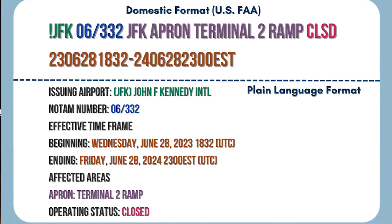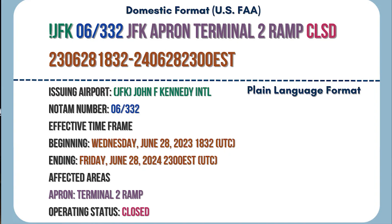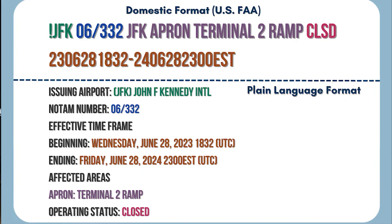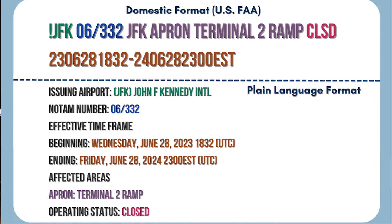NOTAMs follow a standardized format to ensure clear communication. It starts off with a NOTAM number, a unique identifier for each NOTAM, often including the year. The affected location is next — the airport, navigational aid, or airspace affected by the NOTAM. Then it follows up with the details of the notice, a concise but detailed description of what is being affected and the nature of the restriction or change.